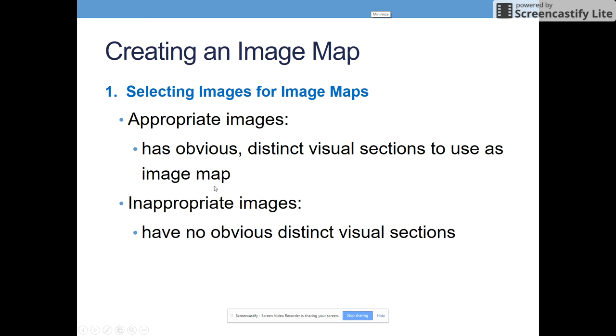So first, we want to select an appropriate image. So something that's appropriate has really obvious distinctive sections to that map that you can see, well, yes, I could click on this particular region and this particular region and this particular region. Whereas an inappropriate image doesn't have distinct visual sections. And I'll show you an example on the next slide.